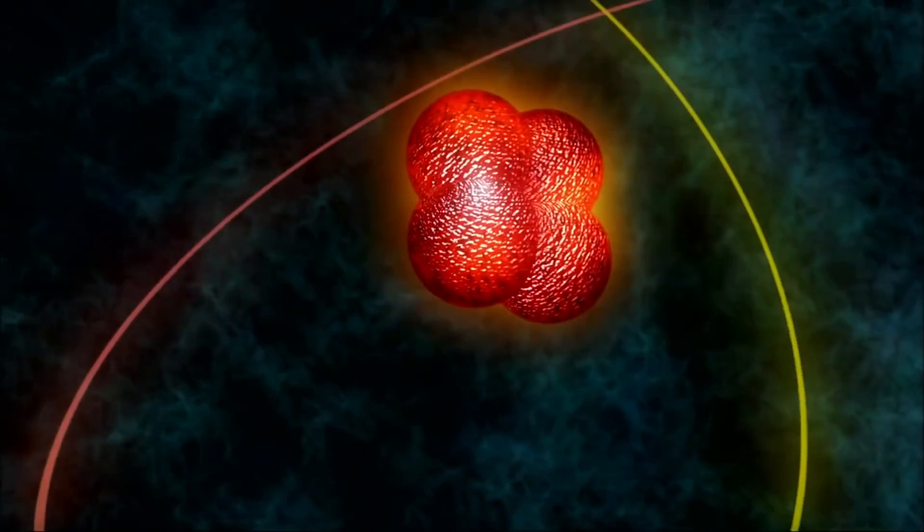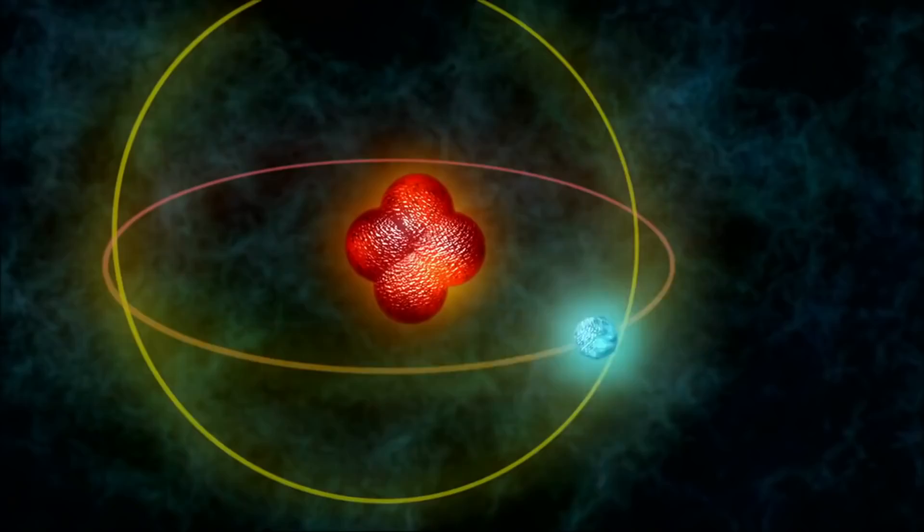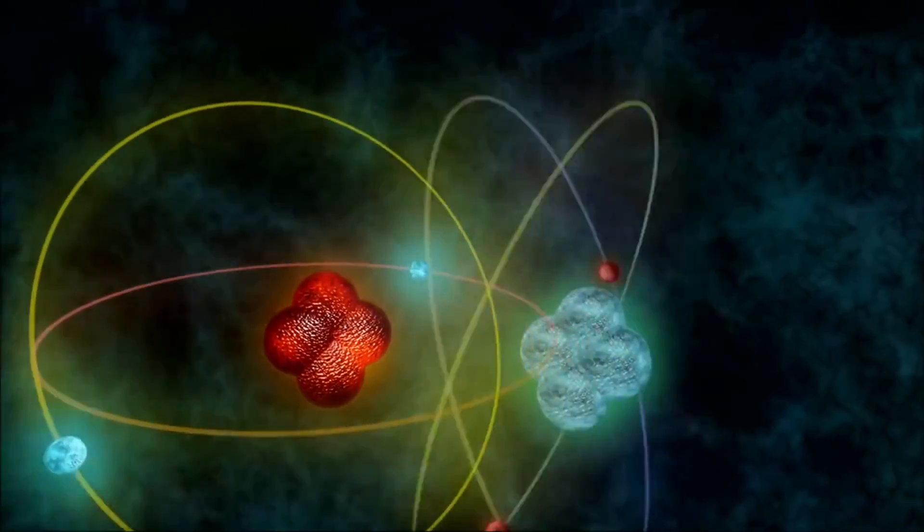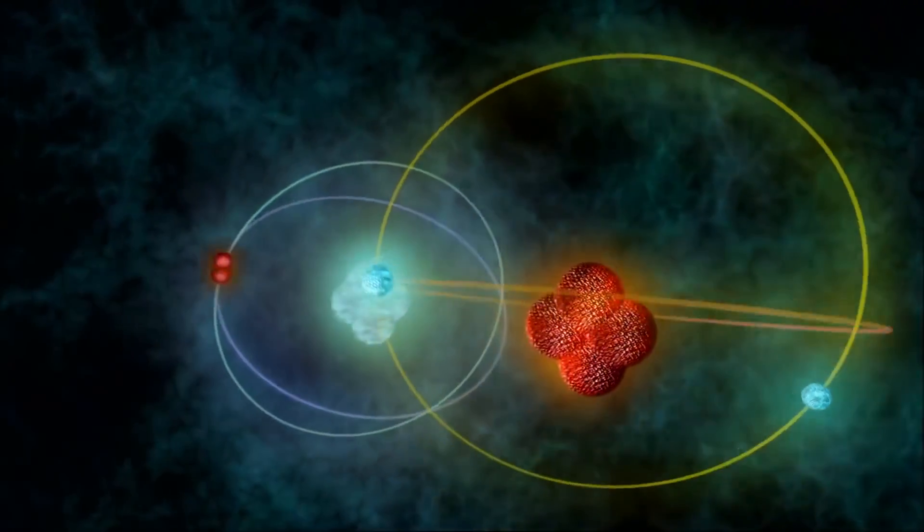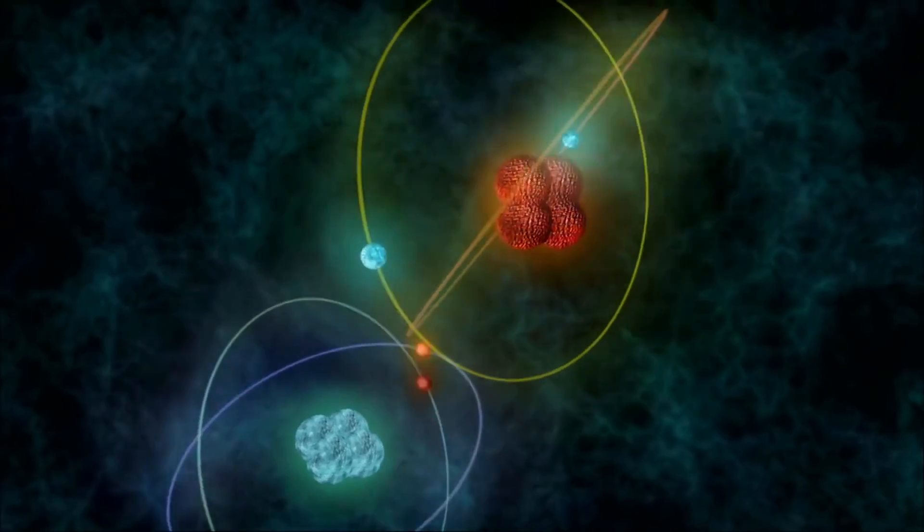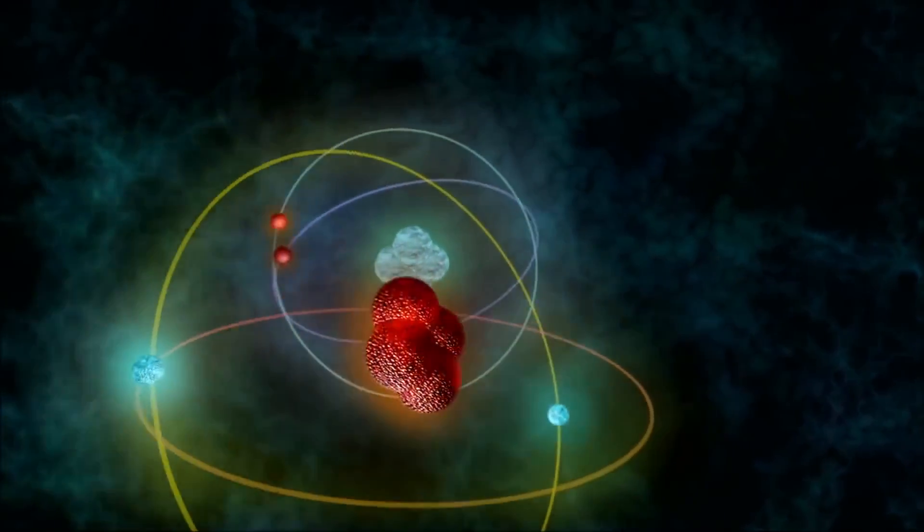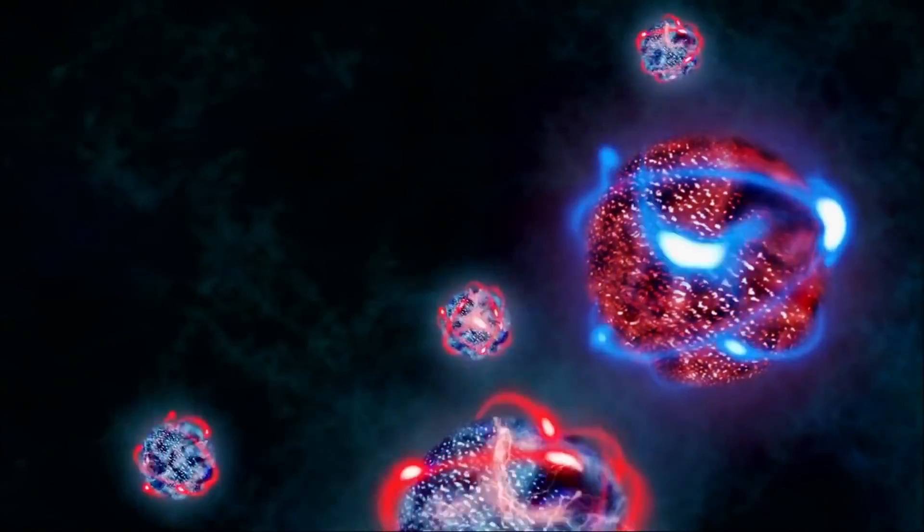Regular matter is made of atoms, which in turn are made of subatomic particles, like negatively charged electrons and positively charged protons. Antimatter are the opposite of these particles. They have the same mass, but the opposite electrical charge. Protons are positively charged particles, that's the nucleus of the atom. The antiproton would be a negatively charged proton that has exactly the same mass.